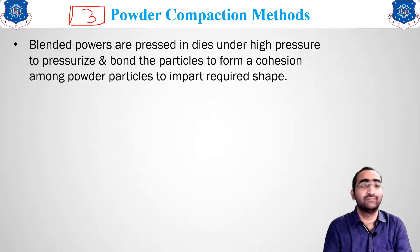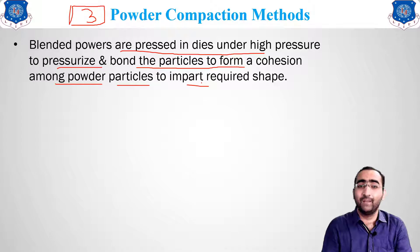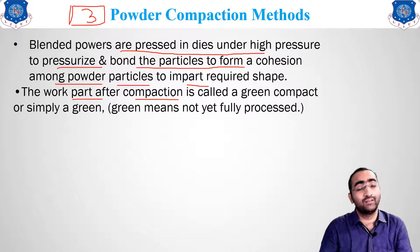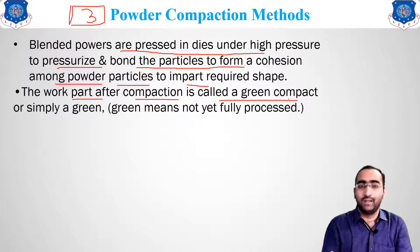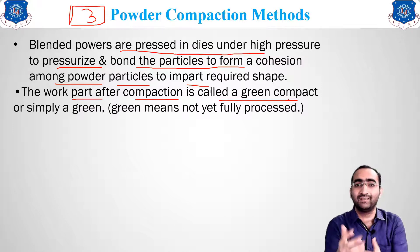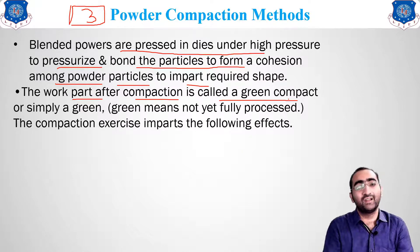In powder compaction, blended parts are pressed in dies under high pressure to bond the particles and impart the required shape. The part obtained after compaction is known as a green compact. For example, take sand or clay — after adding water and shaping it into a ball, that shape is called a green compact.